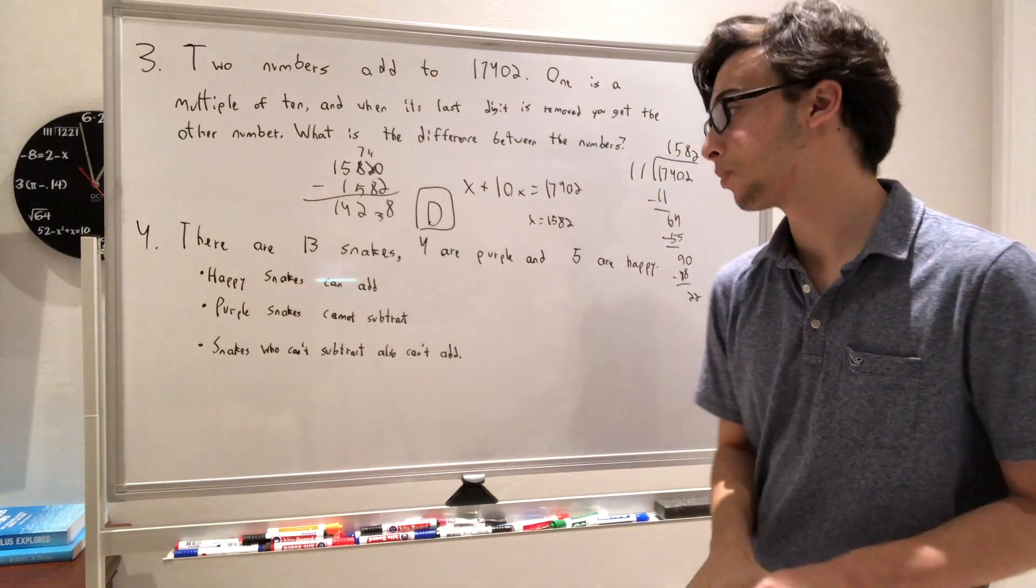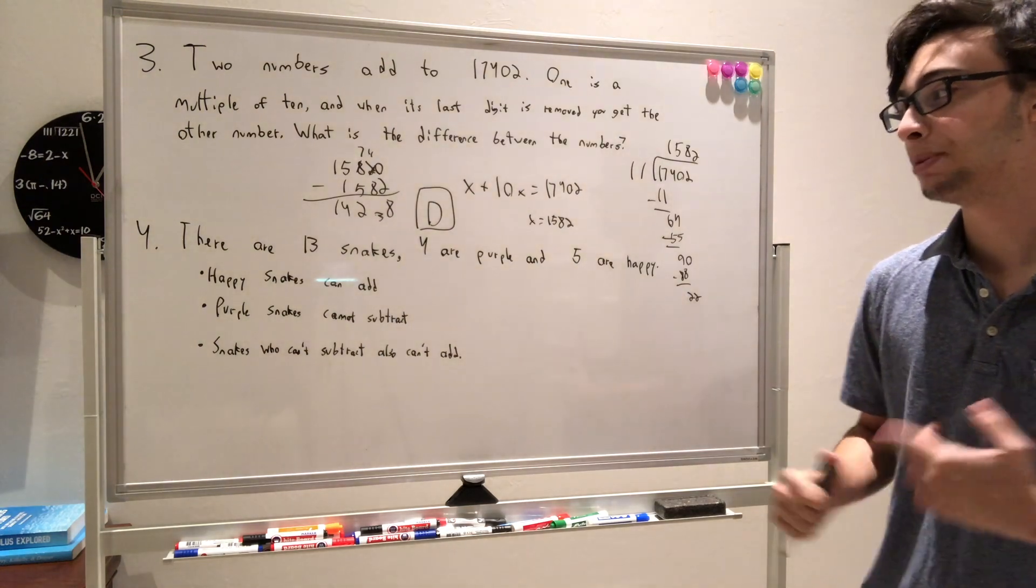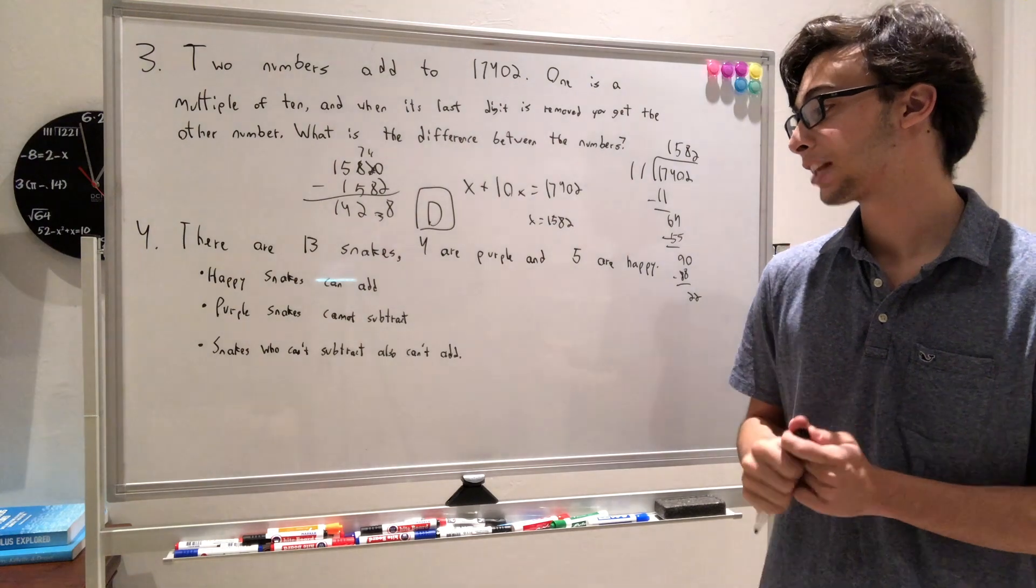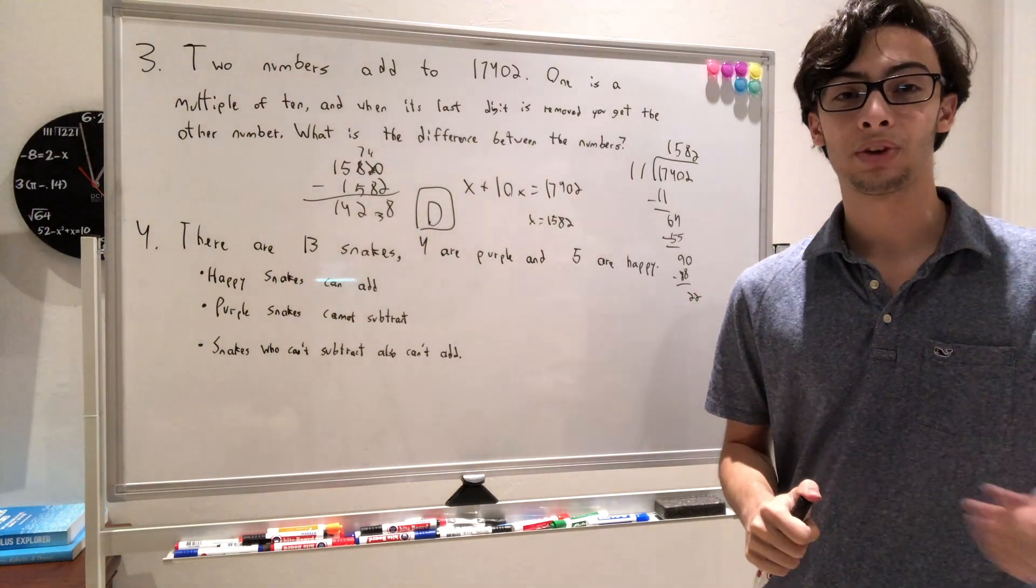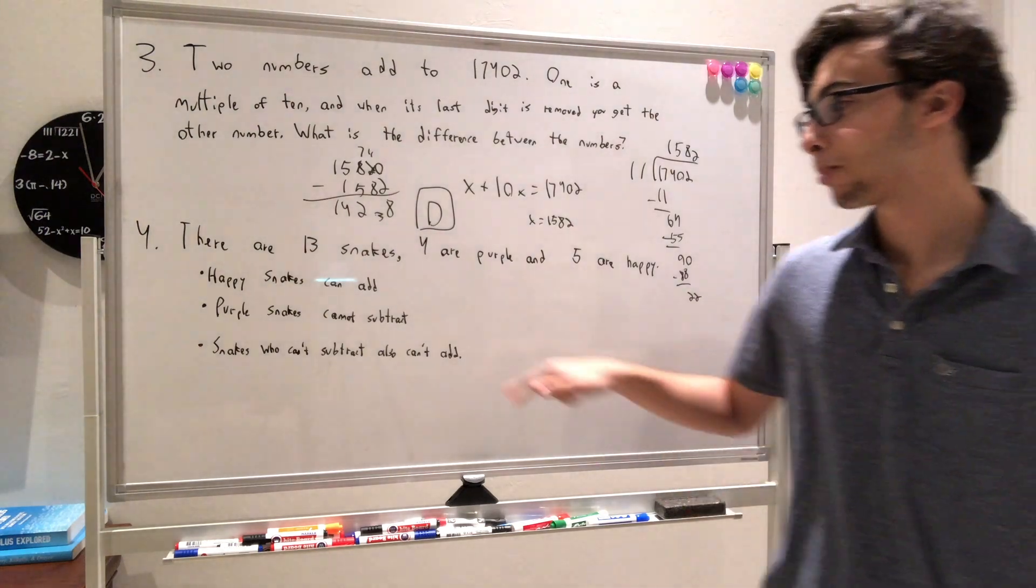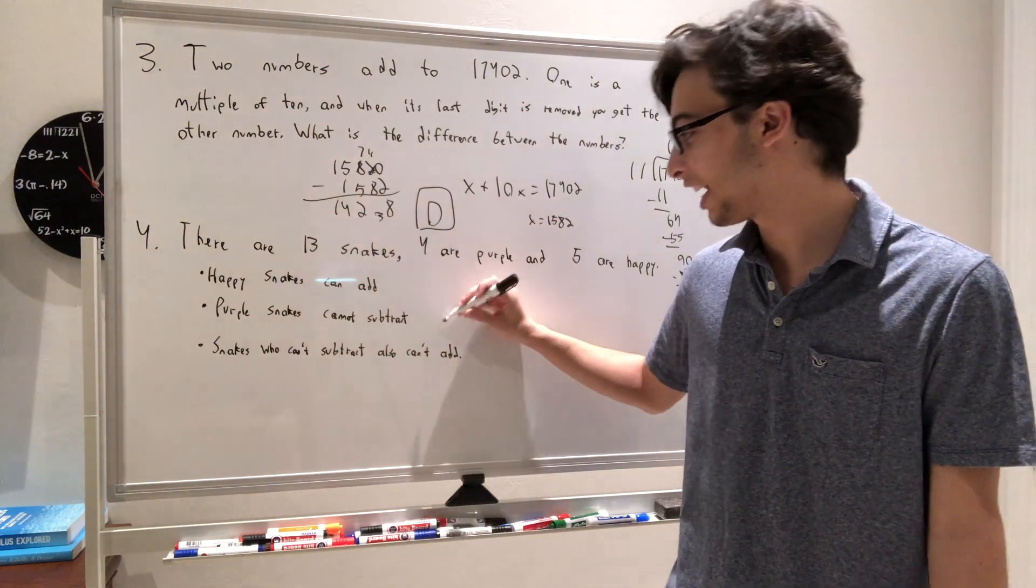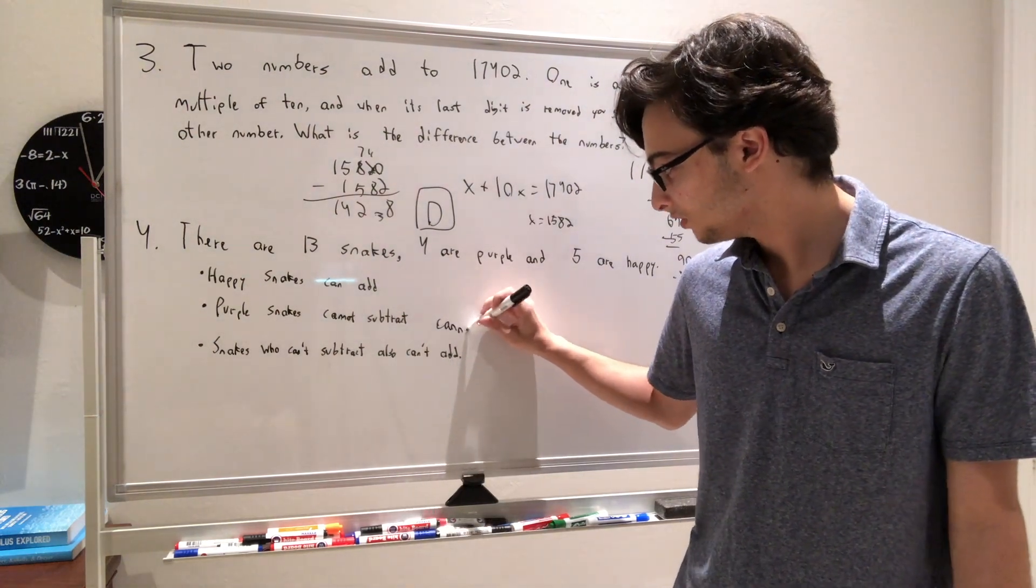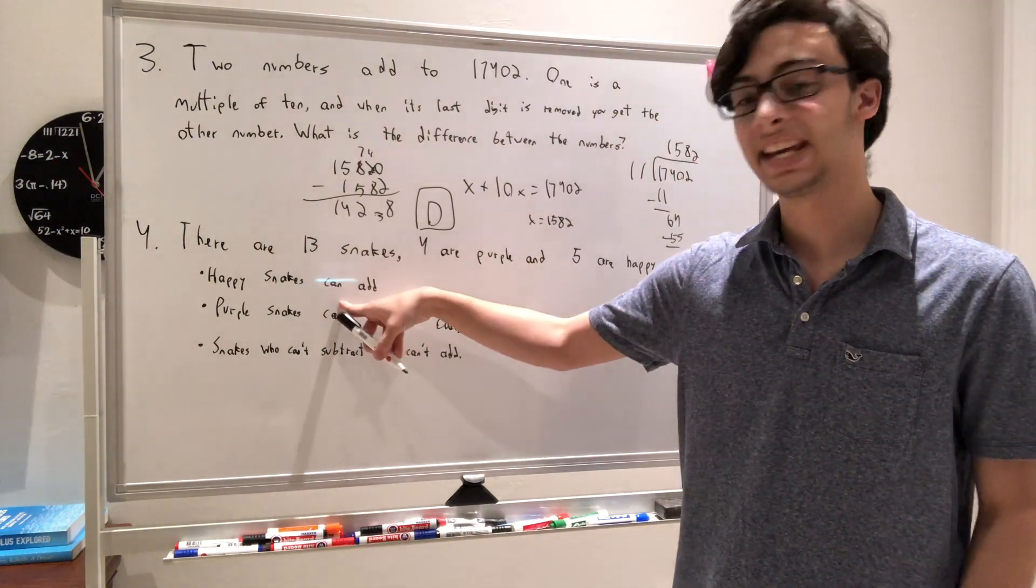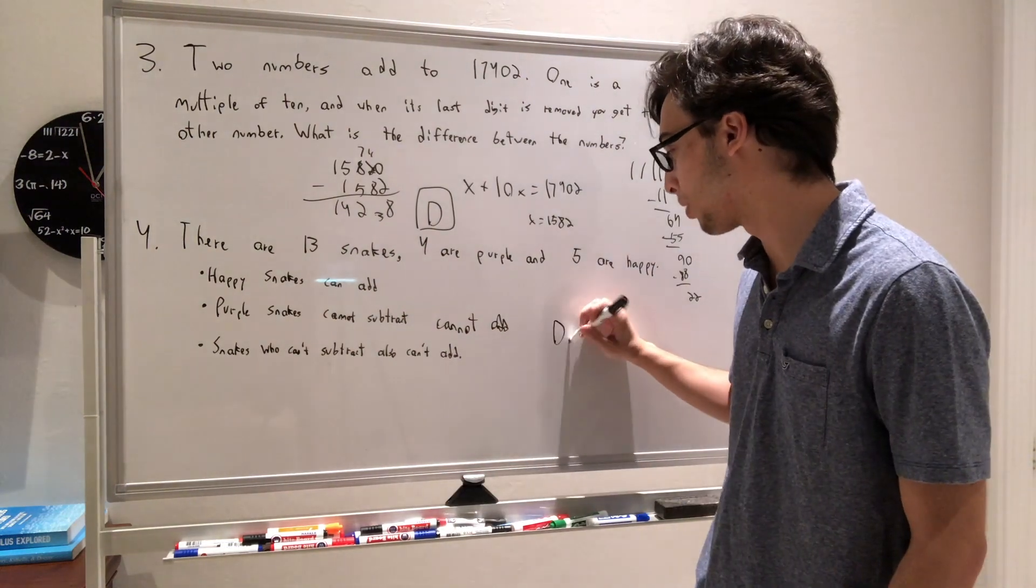Moving on to question number 4. There are 13 snakes, 4 are purple, and 5 are happy. Now it gives us some restrictions. Happy snakes can add. We have purple snakes cannot subtract, and those who can't subtract can't add. We know that purple snakes can't subtract, but those who can't subtract can't add. So we have purple snakes also cannot add. But we have happy snakes can add. So we have happy snakes must not be purple snakes. And we can see that that is answer choice D, and we're done with the problem.